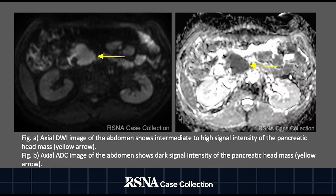Figure A: axial DWI image of the abdomen shows intermediate to high signal intensity of the pancreatic head mass, indicated by the yellow arrow. Figure B: axial ADC image of the abdomen shows dark signal intensity of the pancreatic head mass, indicated by the yellow arrow.